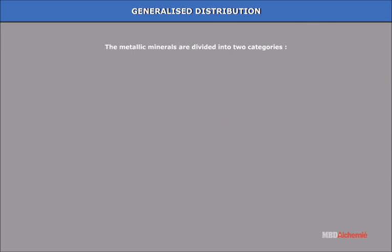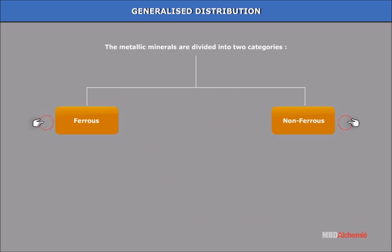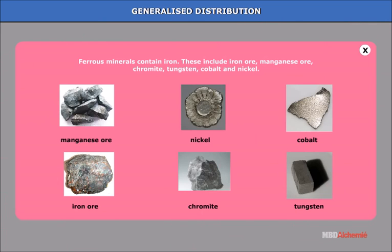The metallic minerals are divided into two categories. Ferrous minerals contain iron and include iron ore, manganese ore, chromite, tungsten, cobalt, and nickel.